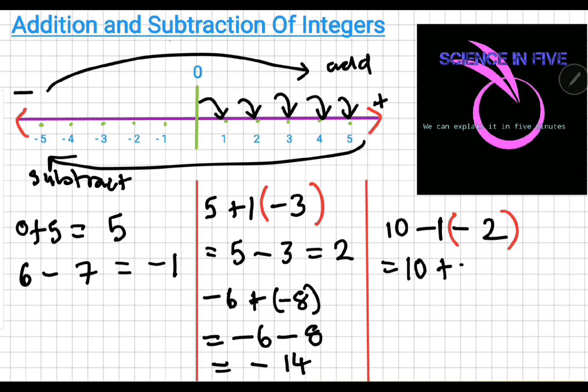So, it's ten plus two gives me twelve. So, subtracting a negative number is simple. Convert negative sign to addition. Similarly, if I had minus five minus minus seven, I know that this would become minus five plus seven which means I need to move seven steps to the right and I'll end up at two.